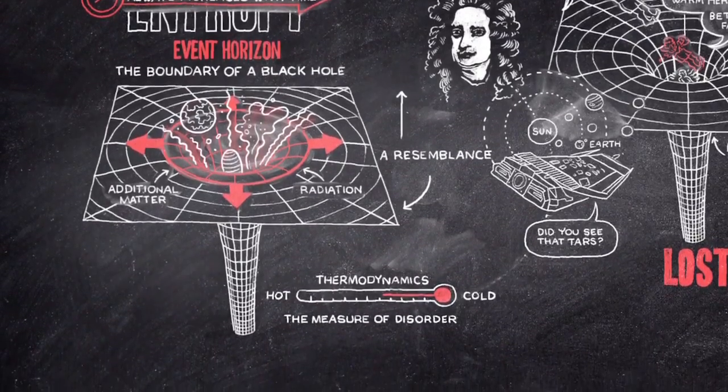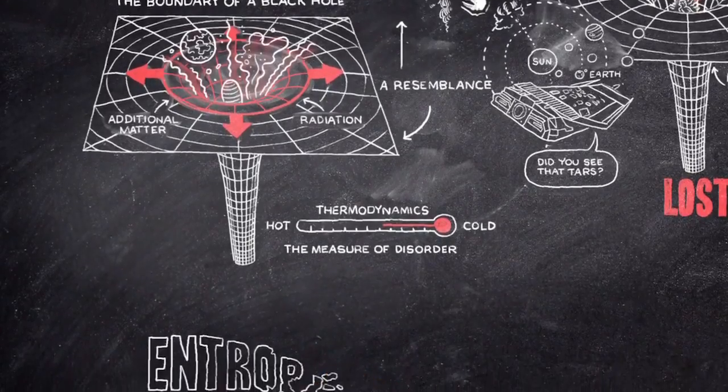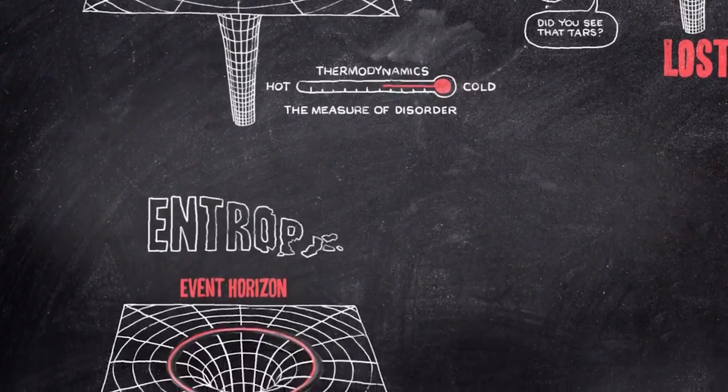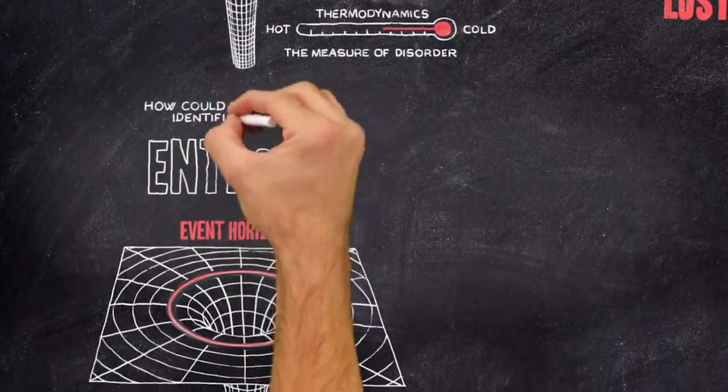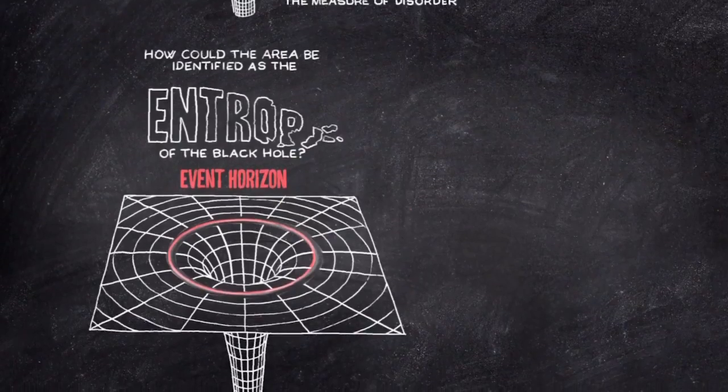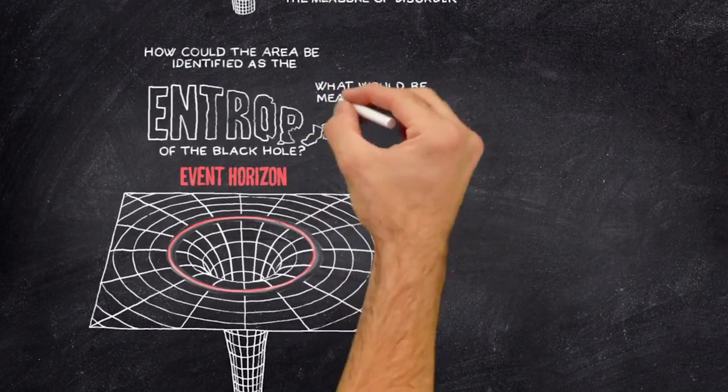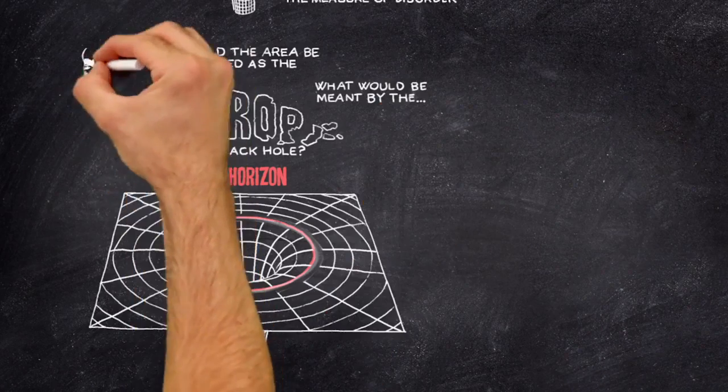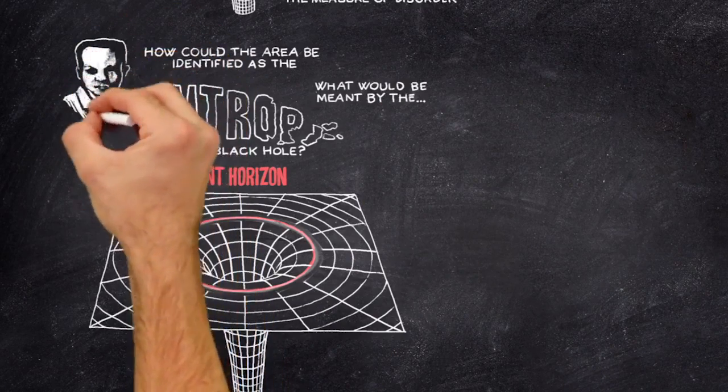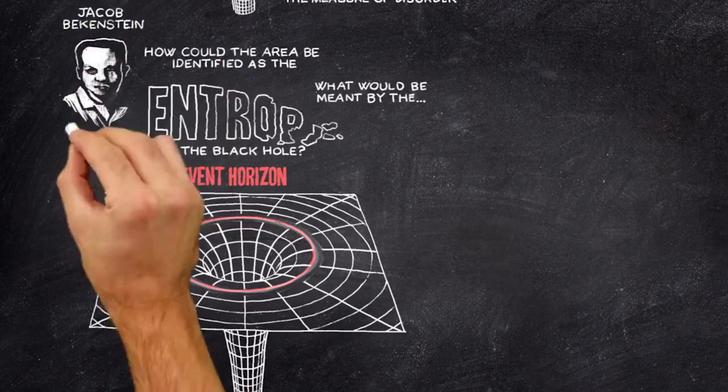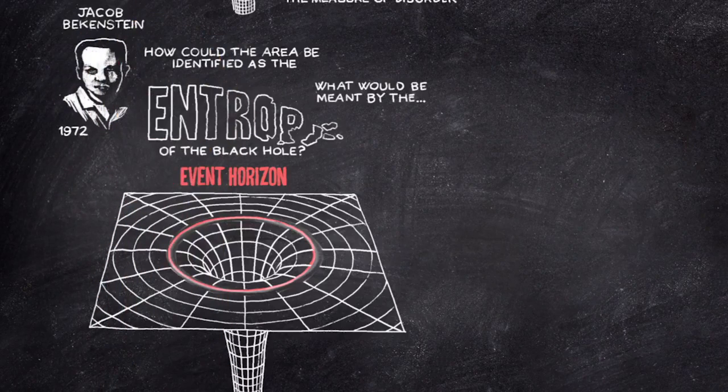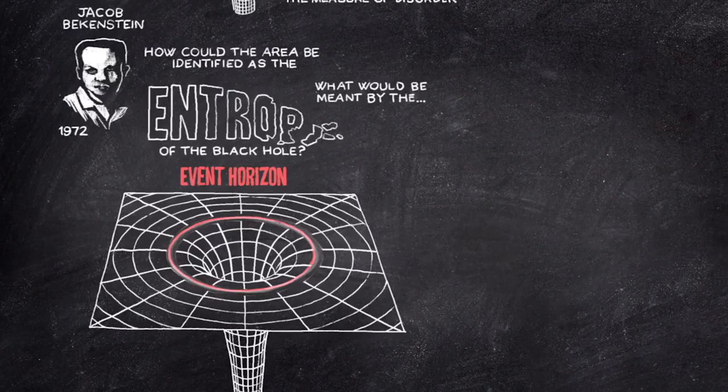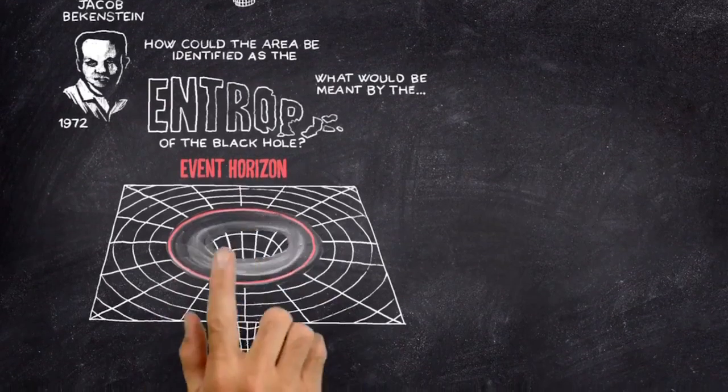Although there is clearly a similarity between entropy and the area of the event horizon, it was not obvious to us how the area could be identified as the entropy of a black hole itself. What would be meant by the entropy of a black hole? The crucial suggestion was made in 1972 by Jacob Bekenstein, who was a graduate student at Princeton University and then at the Hebrew University of Jerusalem. It goes like this.